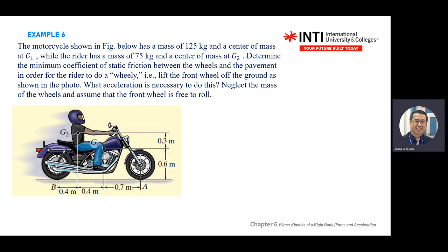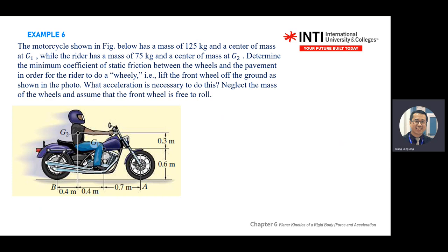If you see the diagram, all the dimensions are given and the mass is given. The motorbike mass M is given, the center of mass of the rider is given, and the center of gravity position is given. Determine the minimum coefficient of static friction. You need to find the friction at the wheel so that the rider can do a wheelie — that is, lift the front wheel off the ground as shown in the photo.